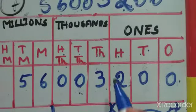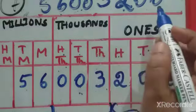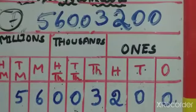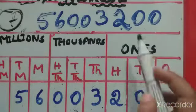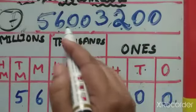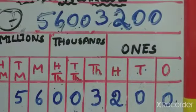Now how to read this number. In the international system, we put a comma after every 3 digits from the right. So: count 1, 2, 3 — comma — then another 3 digits — comma.